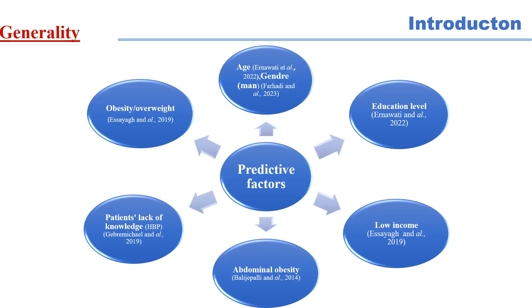Predictive factors include age, education level, low income, abdominal obesity, comorbidities, patient's lack of knowledge, family history of hypertension, and non-adherence to medication. All these factors are predictive factors of uncontrolled hypertension.